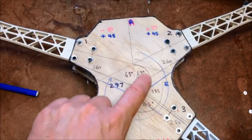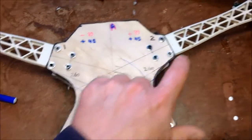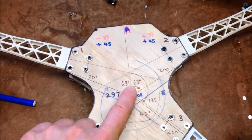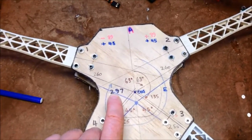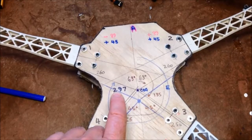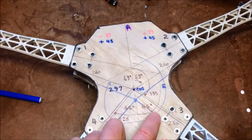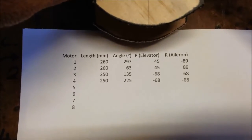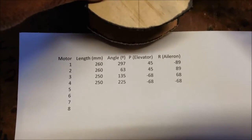Therefore the angle to the front arms from center of gravity is 63 degrees off zero, and back the other way so 297 for the angle for motor 1, and 63 for motor 2. I've punched it into the spreadsheet to get the elevator and aileron using sine — I'll post a link to this spreadsheet.